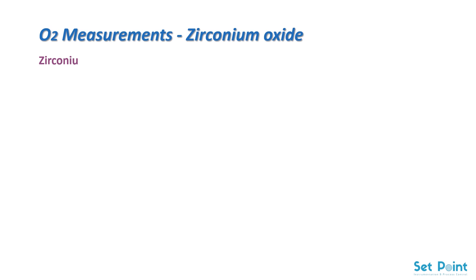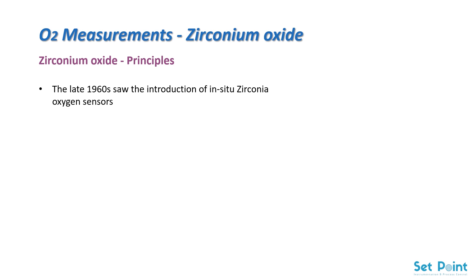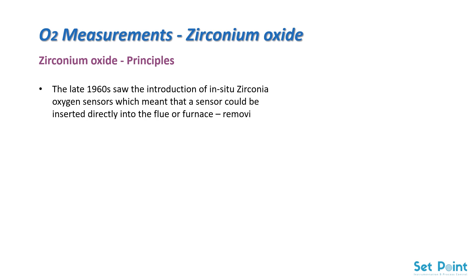Zirconium oxide principles. The late 1960s saw the introduction of in-situ zirconia oxygen sensors, which meant that a sensor could be inserted directly into the flue or furnace, removing the need for expensive and difficult to maintain extractive systems.